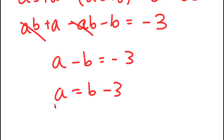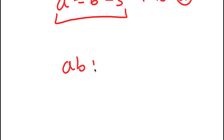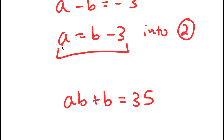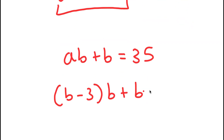Now I can substitute this value of A into equation number two. Equation number two is AB plus B equals 35. Now that I have A in terms of B, I can plug this in. So I get B minus 3, times B, plus B is equal to 35. My only variable in this equation is now B.